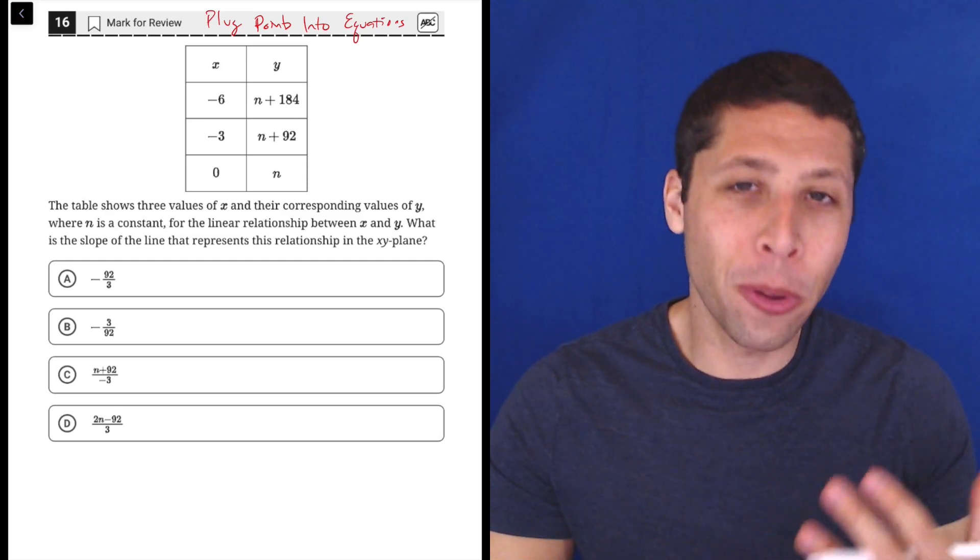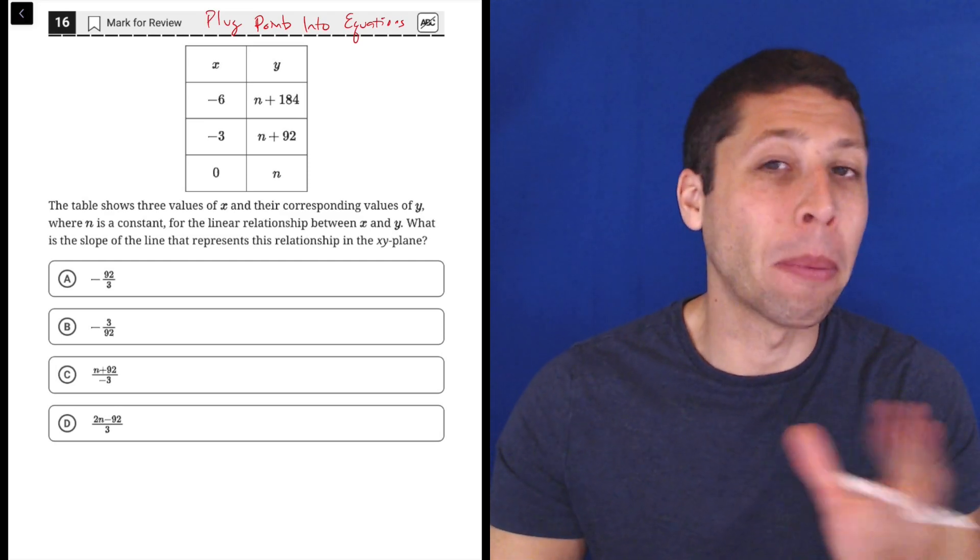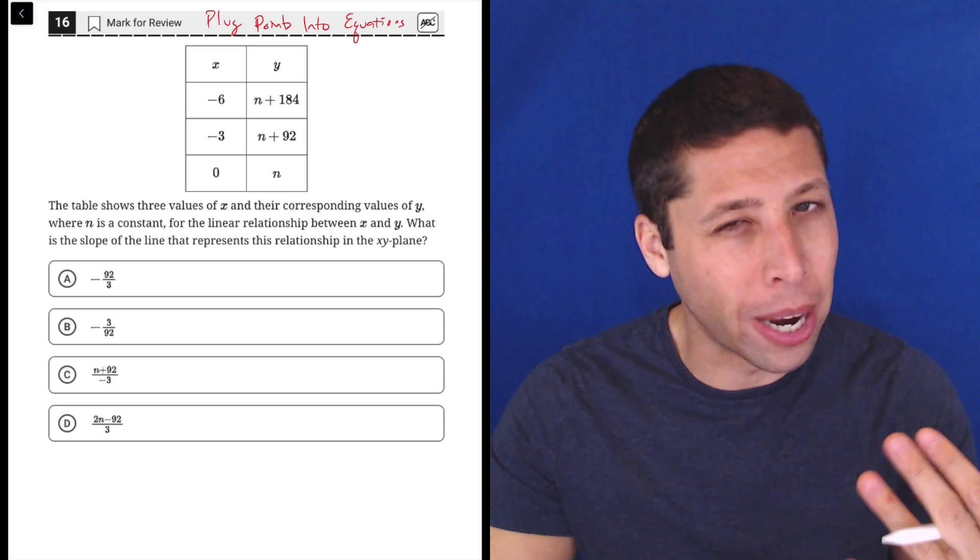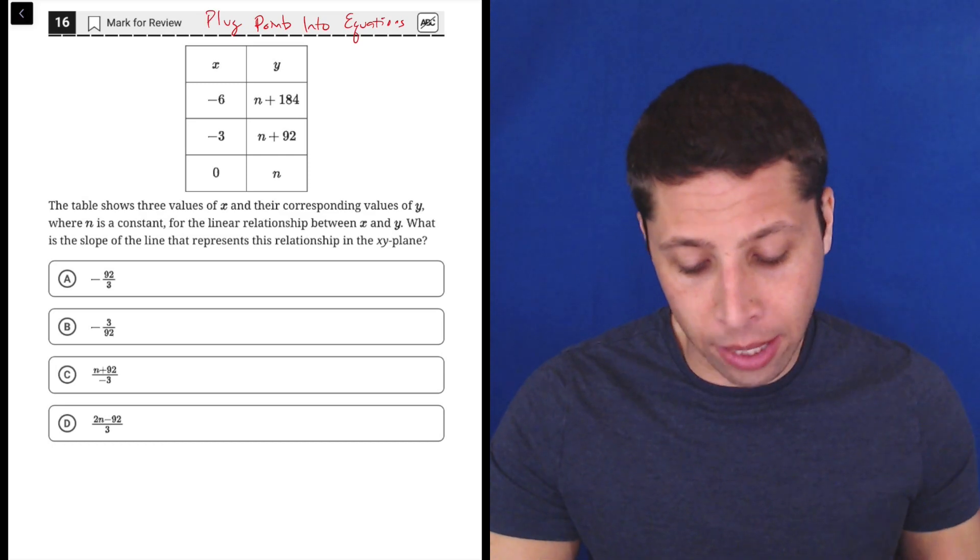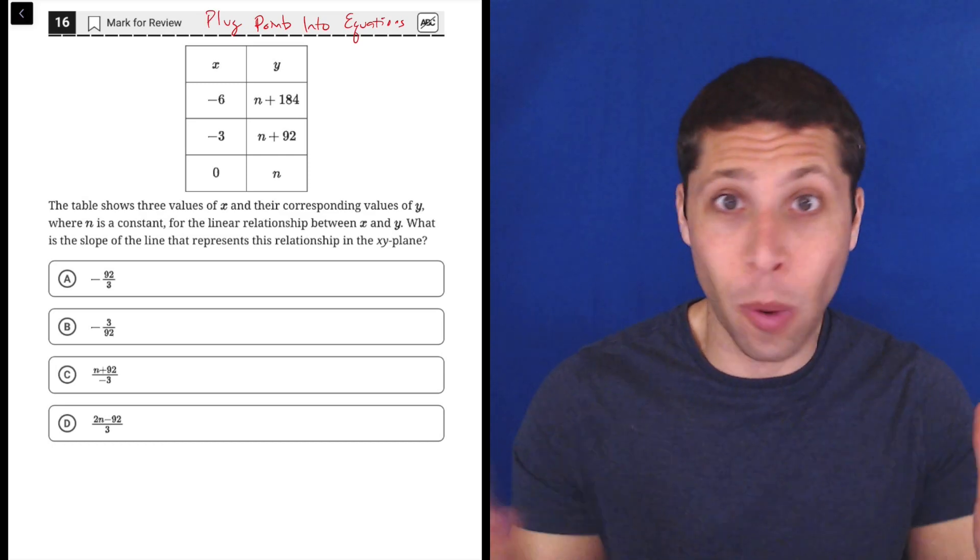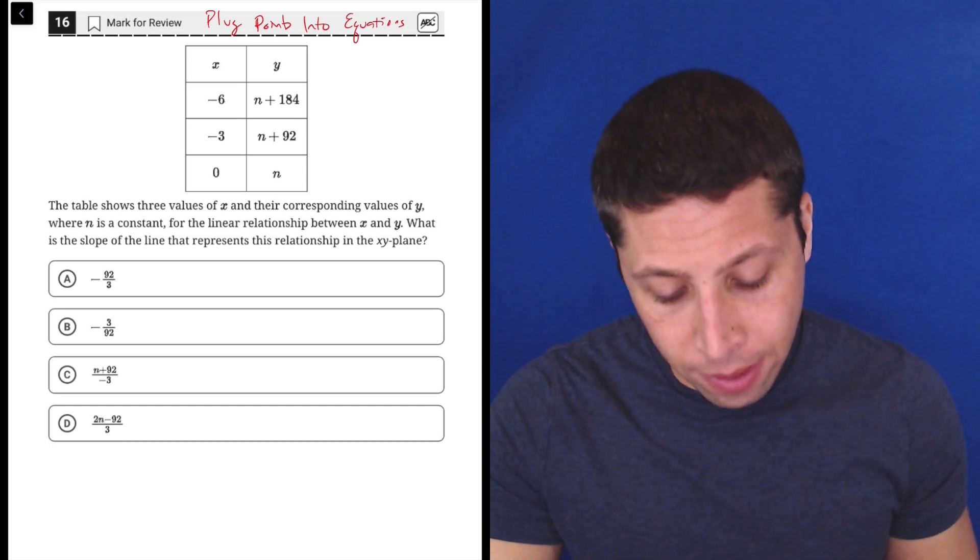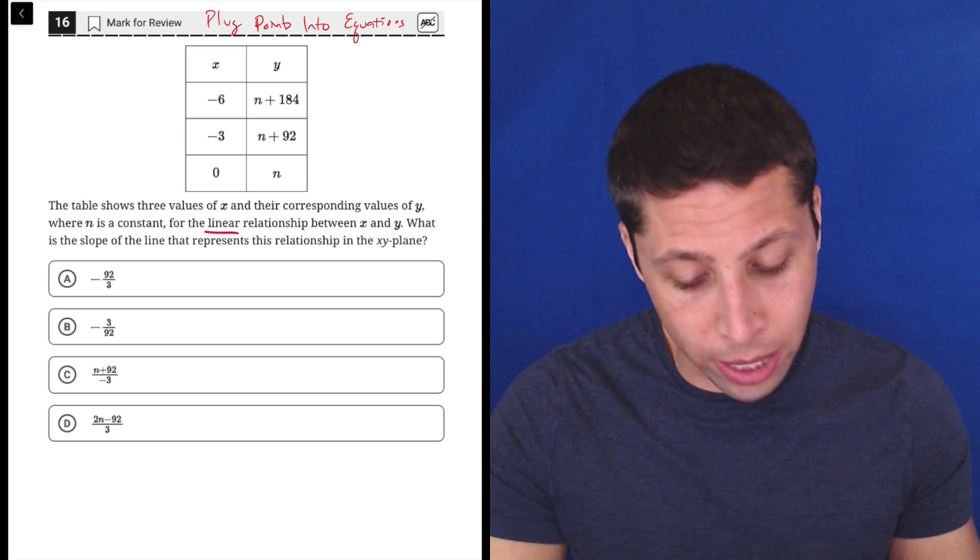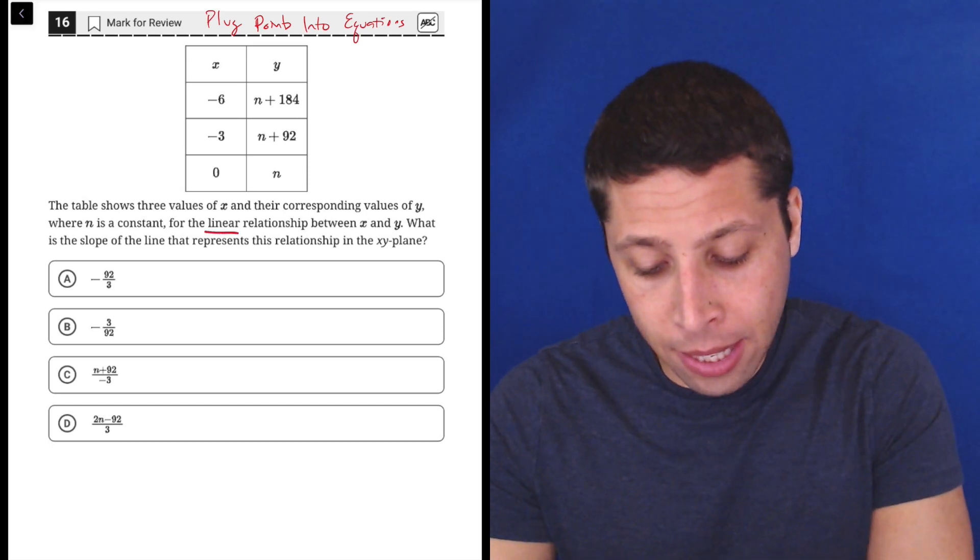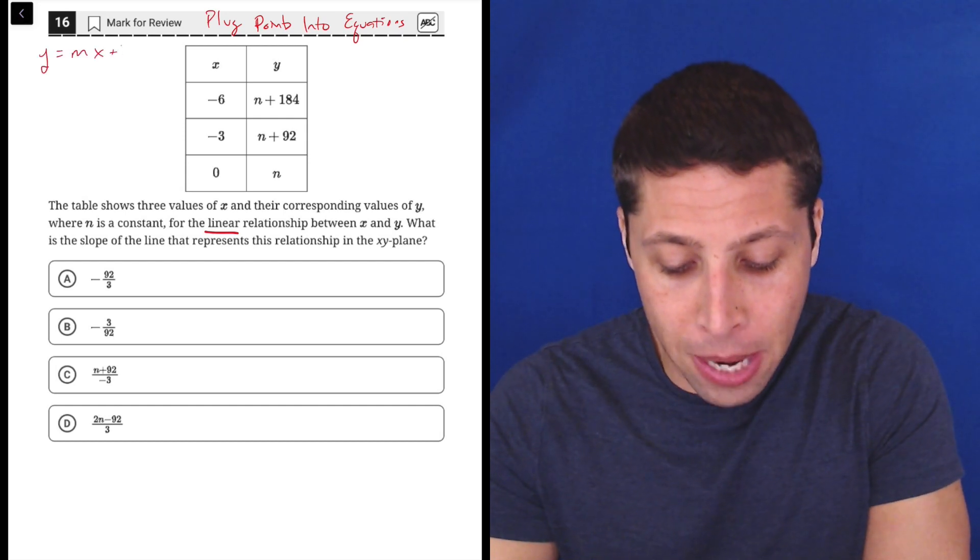So let me show you the way that I think the SAT probably wants us to do, which is a little more algebraic. What I think of when I see this is obviously I have points. It says X and Y in the chart, so I have points. And they're telling me it's a linear relationship so we can create the equation of a line pretty easily, Y equals MX plus B.